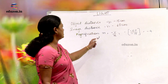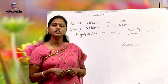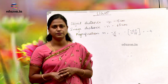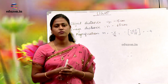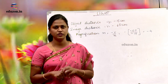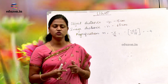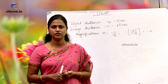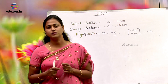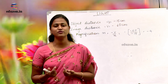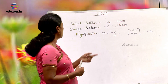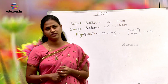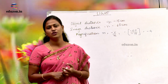We have got magnification M is equal to minus 4. What does that imply? It implies that the image that is formed is real. And where is this image formed? It is formed at 45 centimeters away from the object. We have been asked to find out the distance between the image and the object — it is 45 centimeters, because the object is placed at 15 centimeters and it is projected at 60 centimeters, so 60 minus 15 gives you 45.